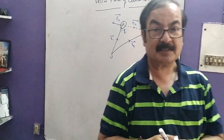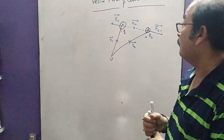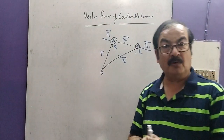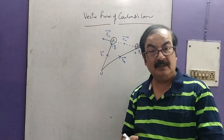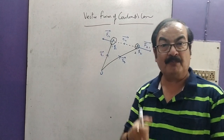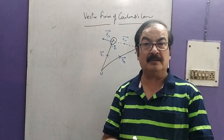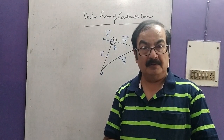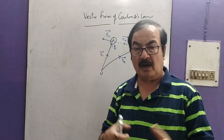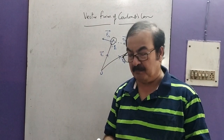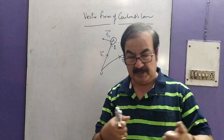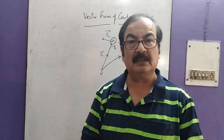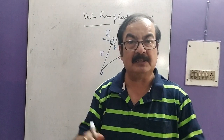Next we have the vector form of Coulomb's law. Why vector form? Because force itself is a vector quantity. To explain the formula of Coulomb's law in terms of vectors, we call it the vector form of Coulomb's law. Now, how this vector form can be explained is very simple. For example, suppose there are two bodies which repel each other, or two bodies that attract each other.